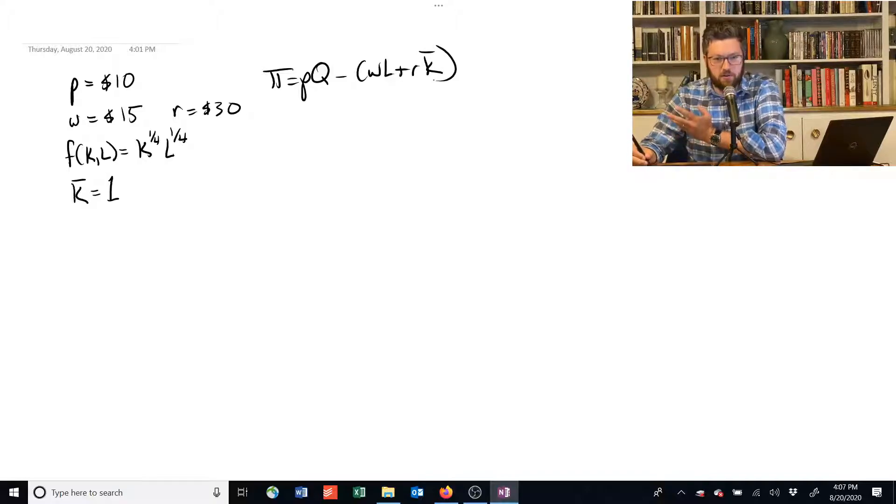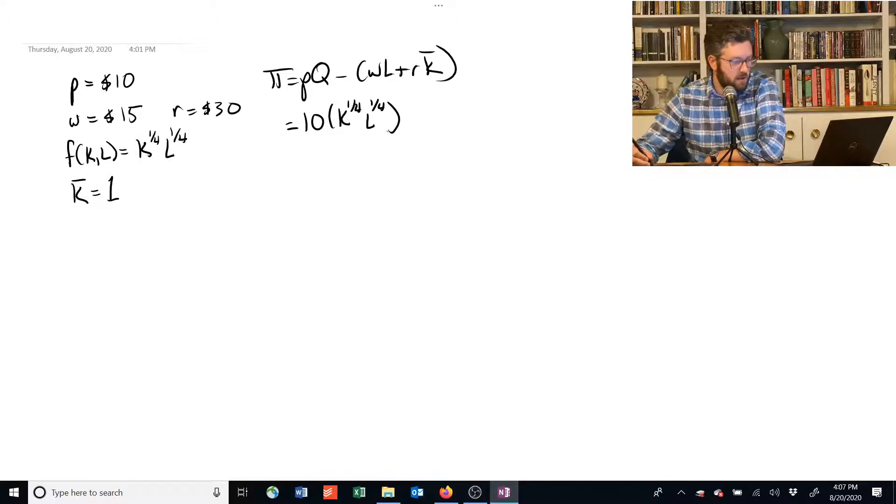Okay, so instead of price equal to P, let's substitute in 10. Instead of the quantity, let's substitute in K to the 1/4 times L to the 1/4. Instead of a wage rate of W, we can say 15. We don't know the labor supply. That's what we have to find.